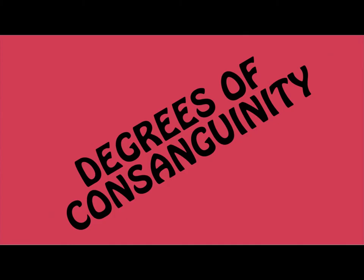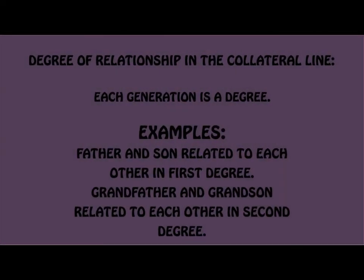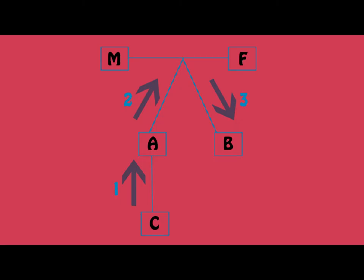Earlier on, we mentioned consanguinity. In the law of intestate succession, it is not only the blood relations or bloodlines that are important, but also the degree of consanguinity — the degree of the bloodline between the deceased and his or her intestate heirs. Each generation counts as a degree. A father and son would be related to each other in the first degree, whereas a grandfather and grandson are related to each other in the second degree. For example, A and C are related to each other in the first degree; C and M are related to each other in the second degree; and C and B are related to each other in the third degree.